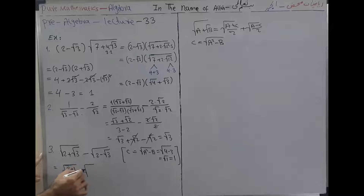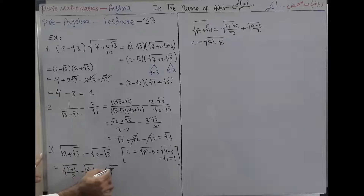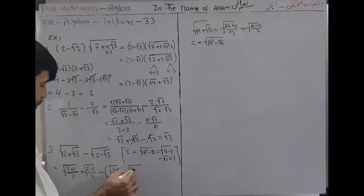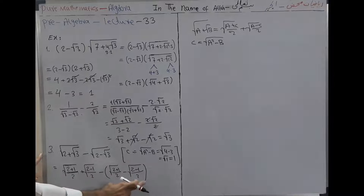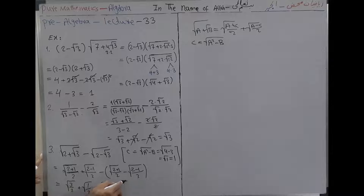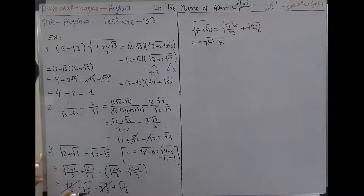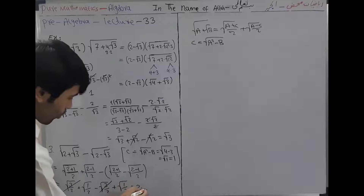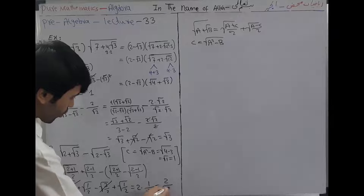For this problem: √((√2 - 1)/2) and √((√2 + 1)/2). Then the second factor uses minus, so we write minus √((√2 - 1)/2). Expanding: √(3/2) + √(1/2) minus √(3/2) minus times minus plus √(1/2). The √(3/2) terms cancel, leaving two copies of √(1/2), giving 2·√(1/2) = 2/√2.